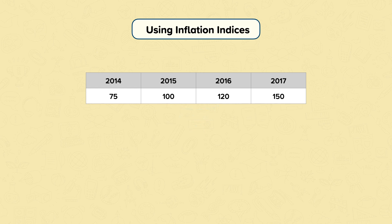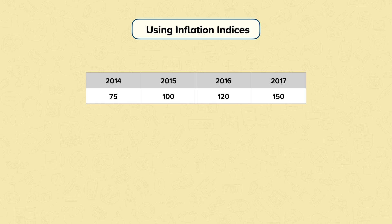In 2017, the index shows us that prices were 50% more than in 2015, or we could say they were multiplied by 1.5. If we are going from the base year, then the multipliers are easier to see, as we are always starting with 100. However, we can see the inflation between any two years by finding out the multiplier. For example, if we wanted to know how much more expensive goods were in 2017 compared to 2016, we want to know how you get from 120 to 150. We can work this out by performing a division calculation: 150 divided by 120 is 1.25.